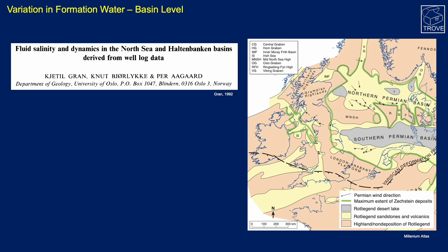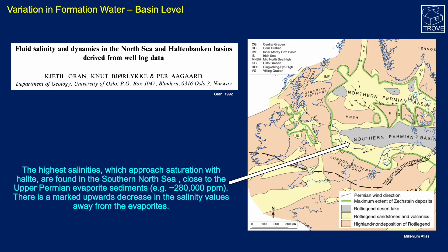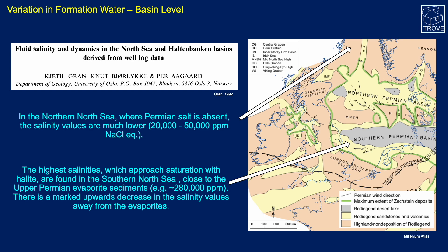It's not just within the field - even at a geological basin level we see variations in formation water. There's a very good paper referenced here for more information. In the North Sea, back in the upper Permian, we get formation waters that are very very saline - they can approach 280,000 ppm - whereas if you go north where there isn't any Permian salt deposited, we see much lower salinity values, down at about 20,000 to 50,000 ppm sodium chloride equivalent.